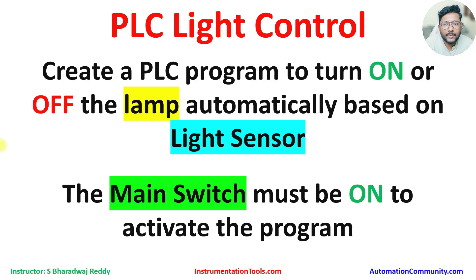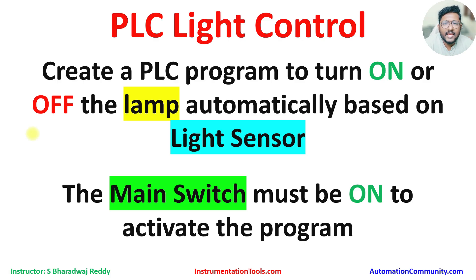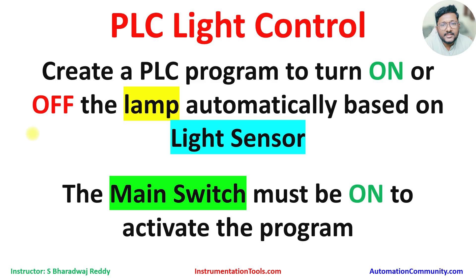Hello everyone, myself Bharadwas. In this video, I will discuss one simple PLC example which is a light control application. We have to create a PLC program to control a lamp automatically based on a light sensor signal. Let's suppose there is a light sensor — you can take an LDR, a light dependent resistor. This sensor changes its resistance value based on light intensity, for example sunlight intensity. Our program is to turn on or off the lamp based on this sensor signal.